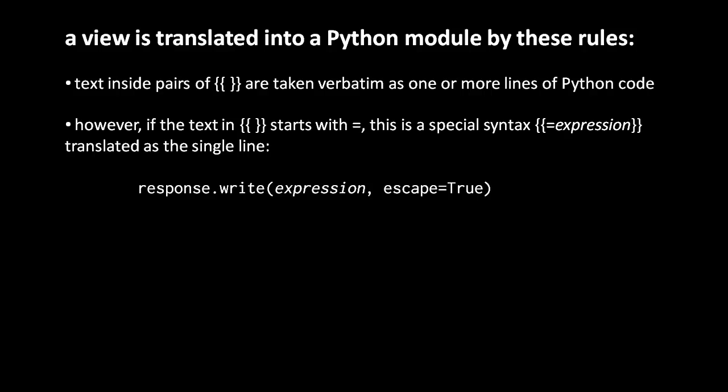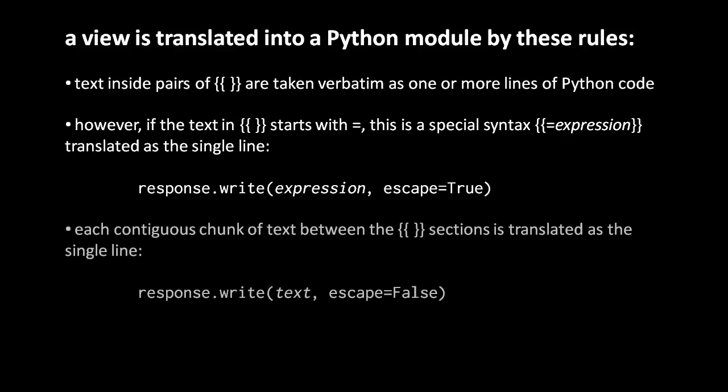As for all the text outside of double curly braces, each contiguous chunk between the pairs of curly braces is translated into a single line of Python response.write with the chunk of text as the string argument to write and escape set to false. In other words, that whole chunk of text is going to be written out to the response body verbatim, without escaping.